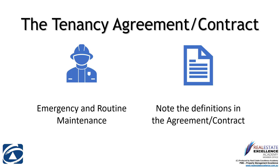The standard terms of the Tenancy Agreement Form 18A set out the legal definitions of what is emergency maintenance and what is routine maintenance. Please note those definitions in the agreement. As stated, everything is legally required to be in writing; however, if you have an emergency repair situation as per the definition, please phone our agency and refer to the agreement for emergency after-hours contact details and procedures — we'll confirm in writing at a later date.